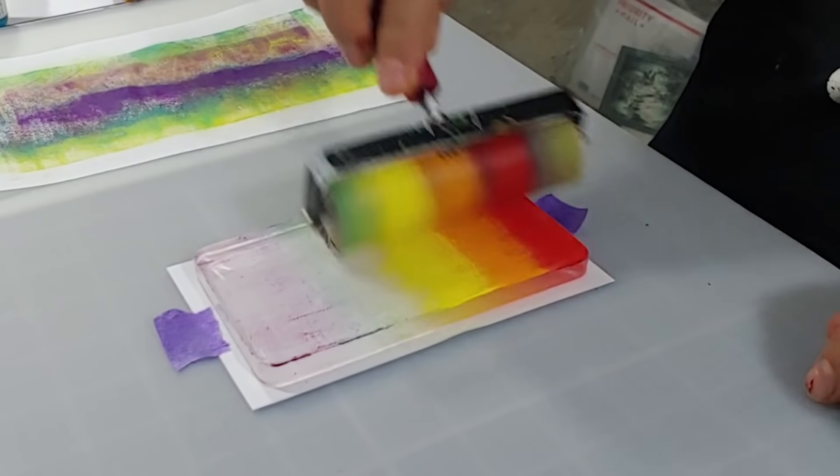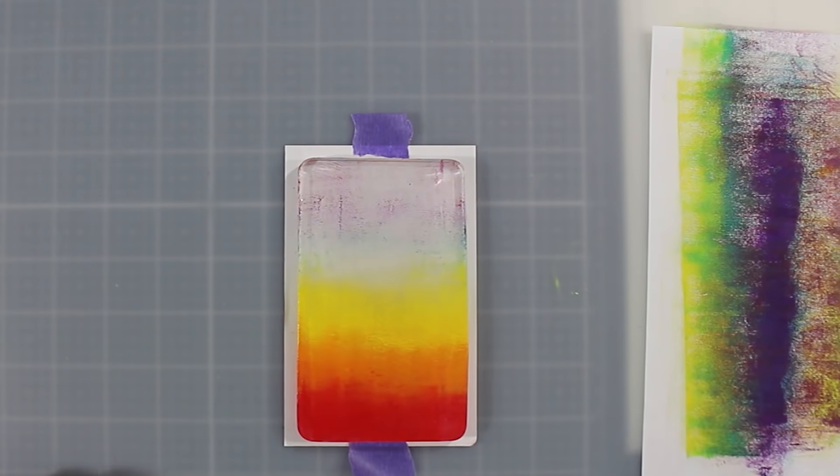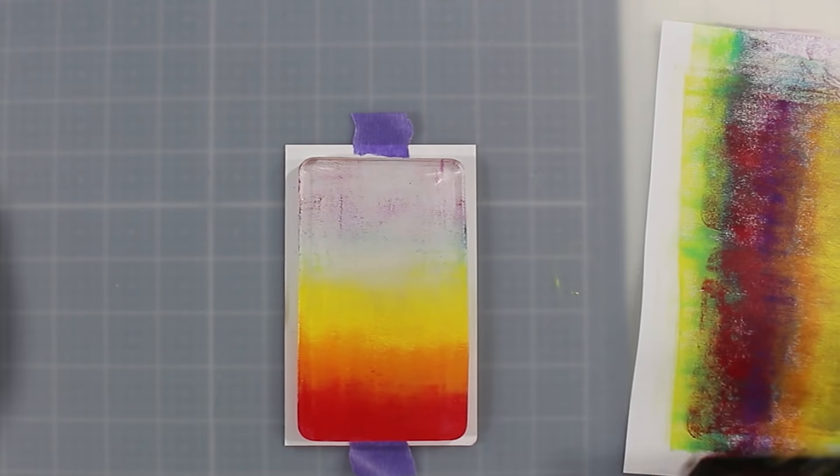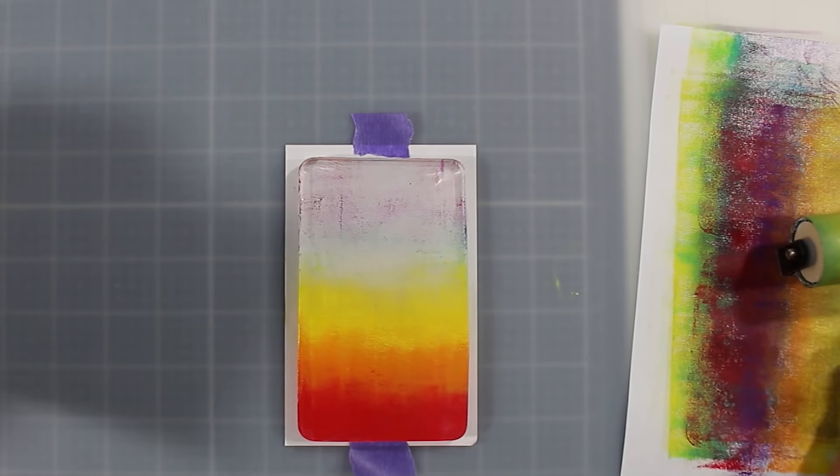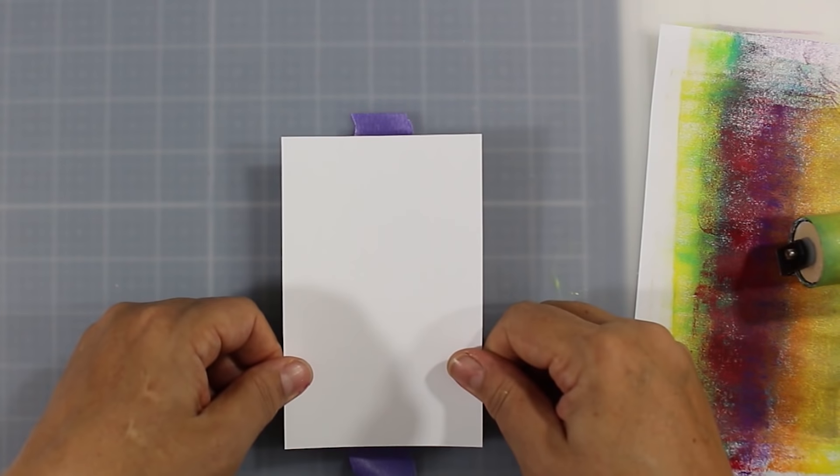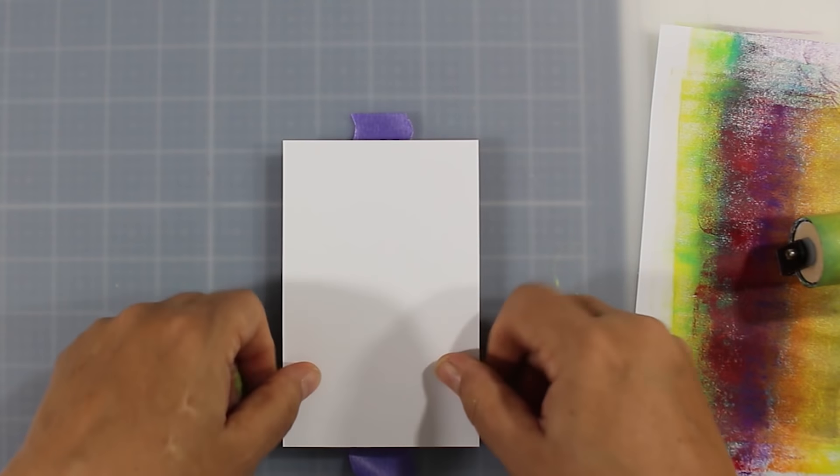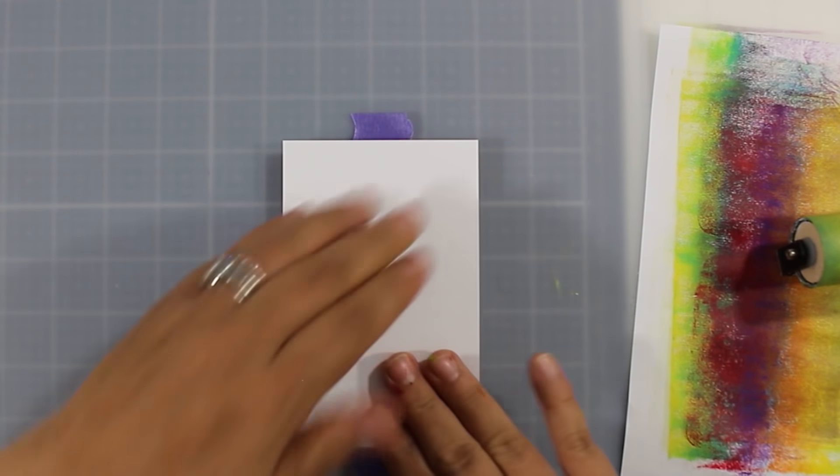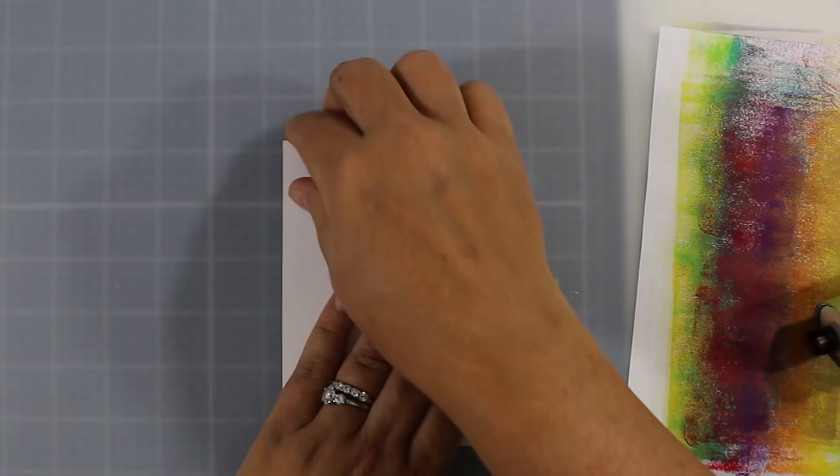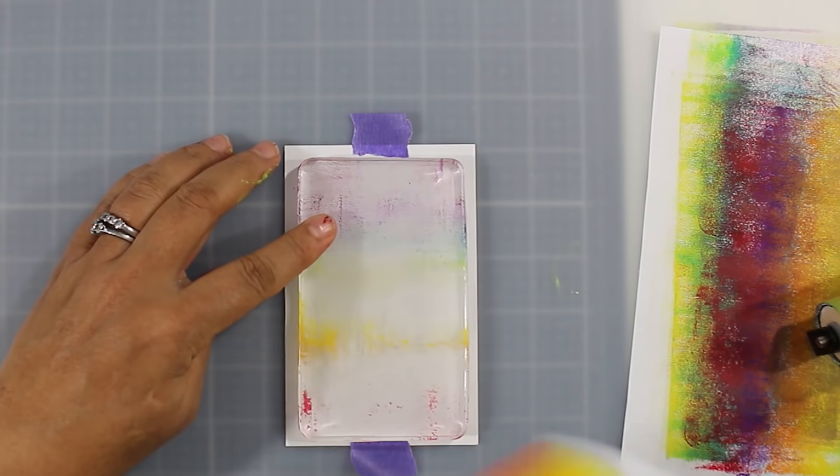Now when you have three, you want to kind of move your brayer up and down, just kind of getting that blend together. And I decided not to do all six colors at once because my brayer is not wide enough to cover the entire plate. If it was, I could do that. So I'm going to do it just like I did the other colors that you just saw.